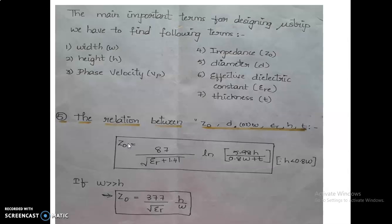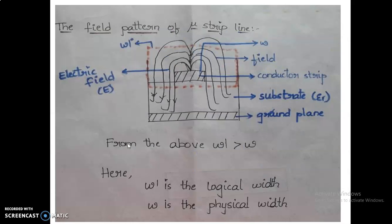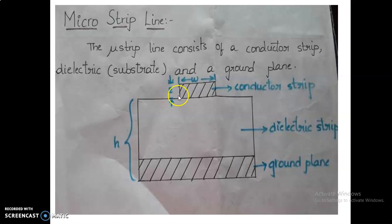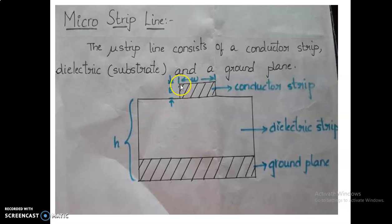Let us discuss the construction, then move to the principle. Observing the construction, you need to understand three things: we have a conductor, a dielectric, and a ground. The parameters are: h represents height, t represents thickness, w represents width, and if it is in circular form it has some diameter. These are the key parameters to understand.